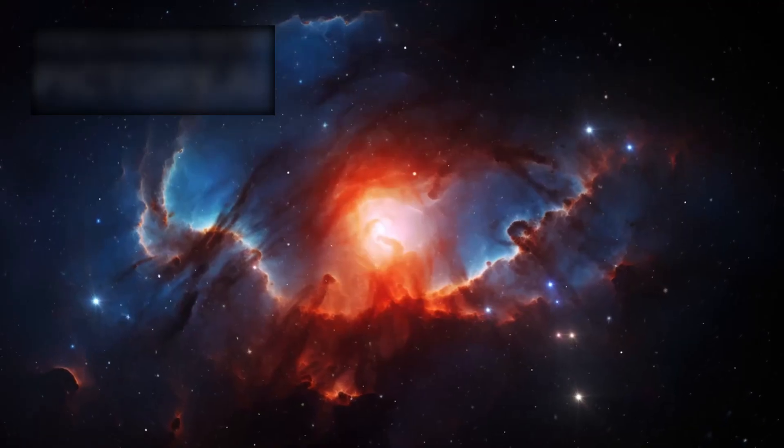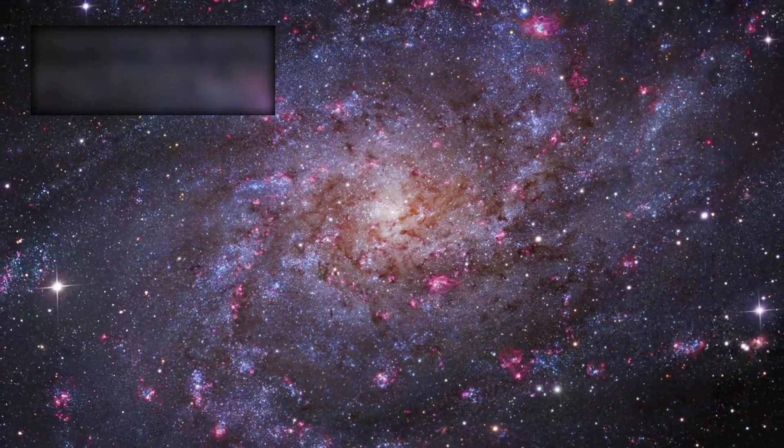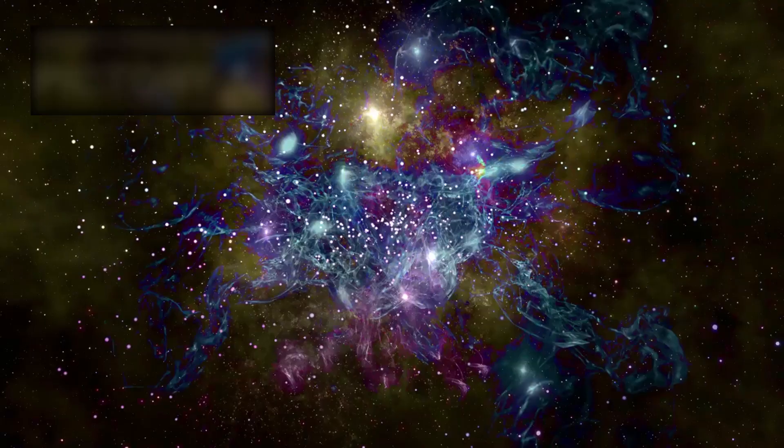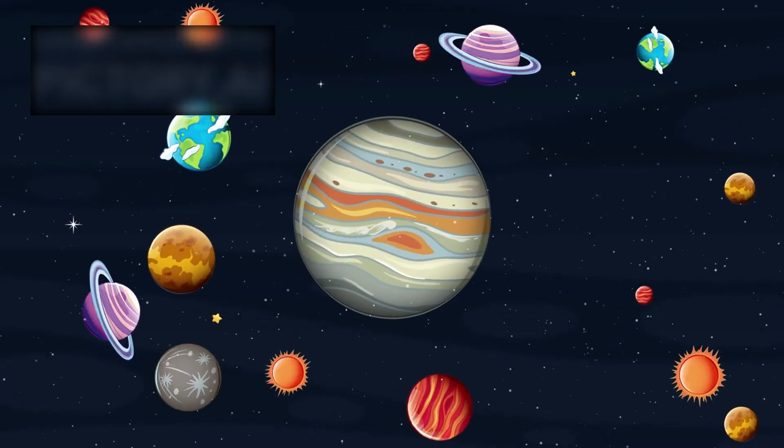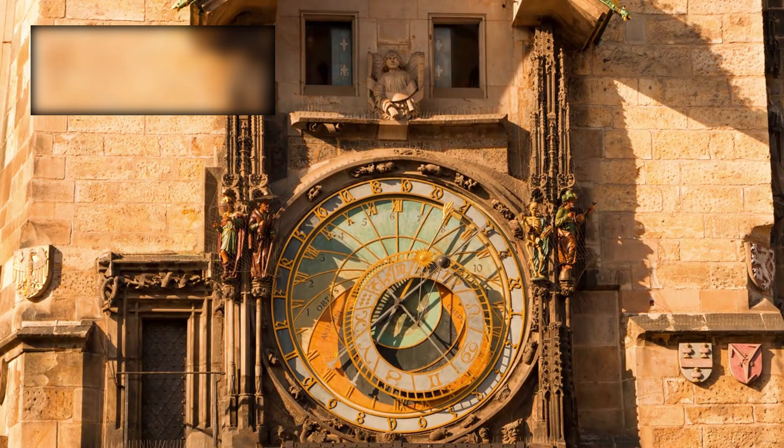As Webb gazed deeper, patterns began to emerge: golden spirals, elegant ratios, geometry repeating across galaxies. It wasn't chaos—it was choreography. The universe seemed to move to a rhythm older than time itself.